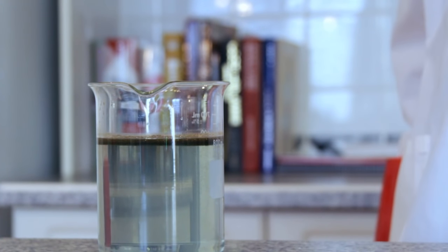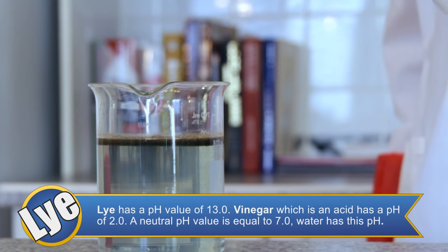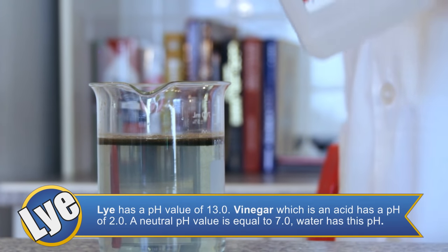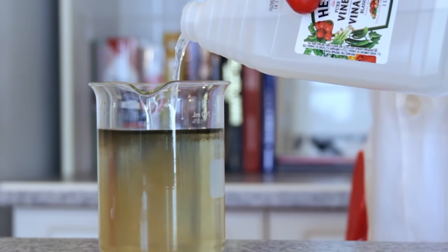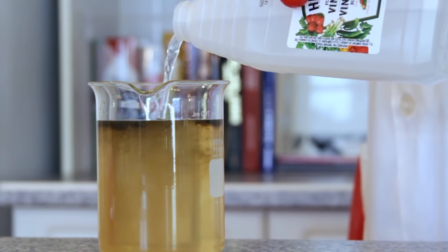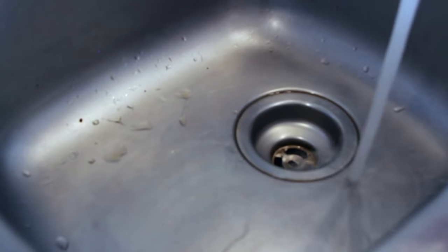Because lye is produced in this reaction, and lye is a very strong base, we're going to have to neutralize our solution before we can properly dispose of it. This is where the vinegar comes in. Vinegar is an acid. Pour vinegar into your solution, and it will bring the pH down to a neutral level, which is safe for disposal.